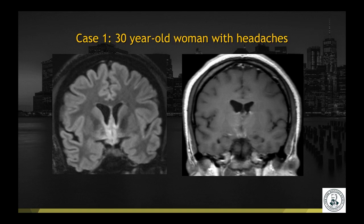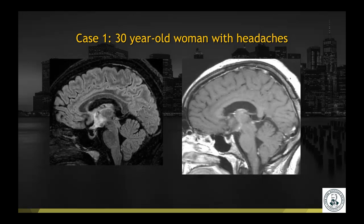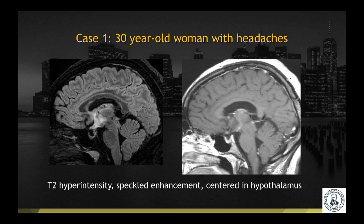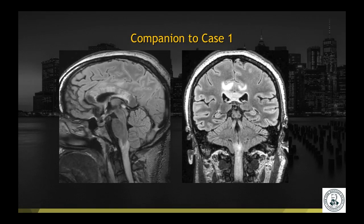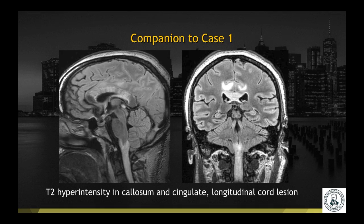Case number one: a 30-year-old woman with headaches. We have a coronal T2 FLAIR as well as coronal T1 post-gadolinium images. This is the same patient with sagittal images shown. Findings include T2 hyperintensity and speckled enhancement centered in the hypothalamus. A companion case in a different patient shows T2 hyperintensity in the corpus callosum and the cingulate gyri bilaterally, as well as a longitudinal cord lesion in the visualized cervical cord.